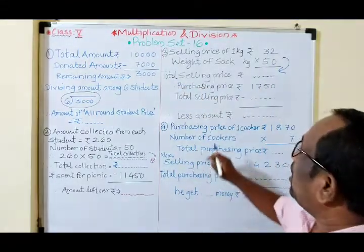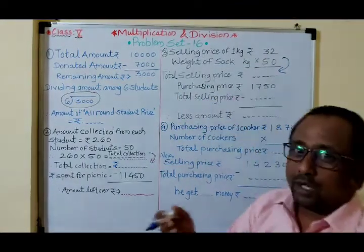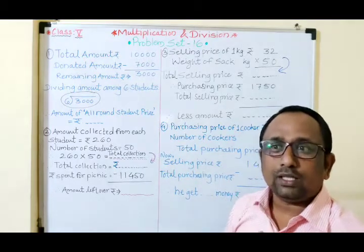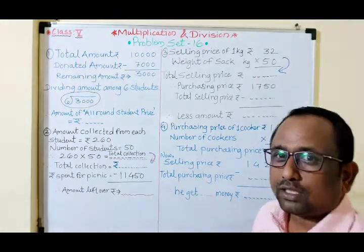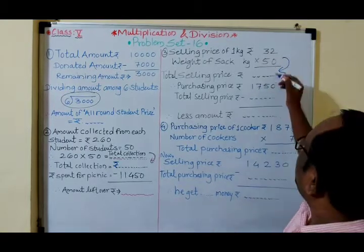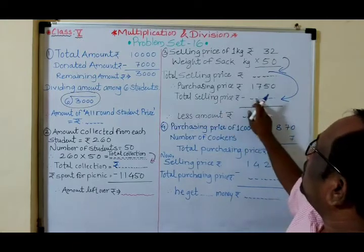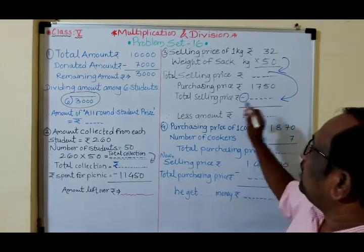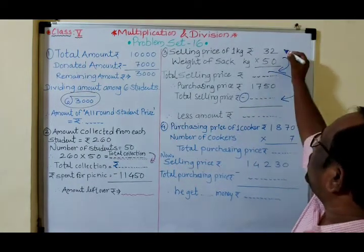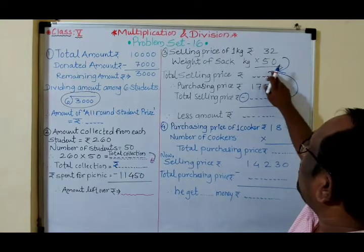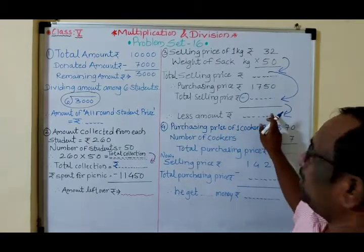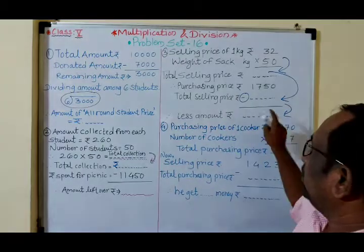In Class 7 you will study cost price (CP) and selling price (SP). Here, the purchasing price is ₹1,750. Subtract the total selling price from the purchasing price: ₹1,750 minus total selling price gives you the loss amount. First do the multiplication to find total selling price, then subtract from ₹1,750. Whatever you get is the 'less amount' — the money he lost.